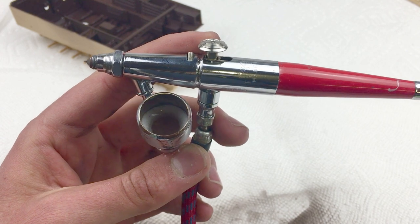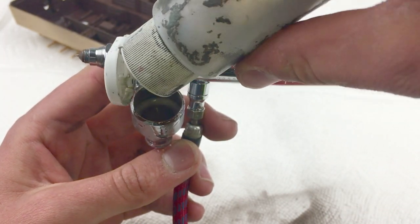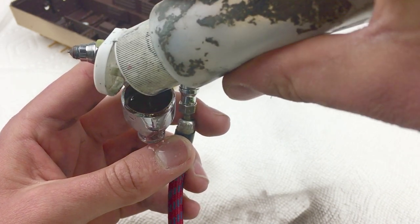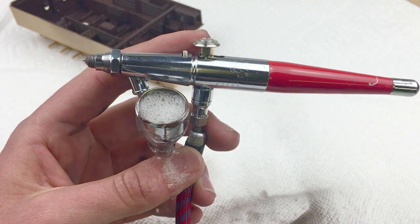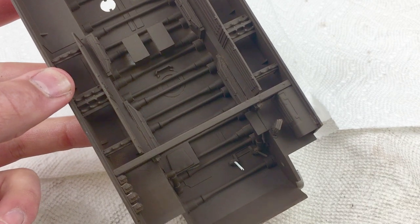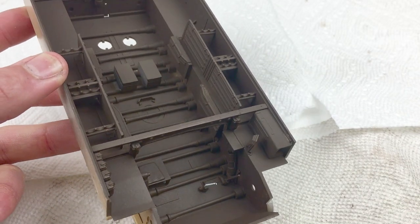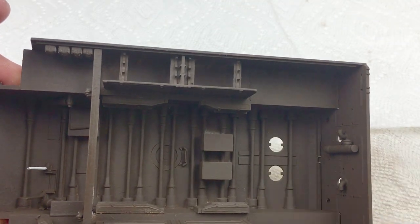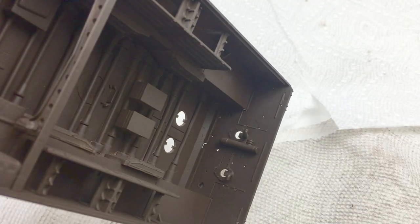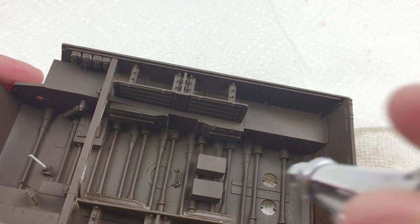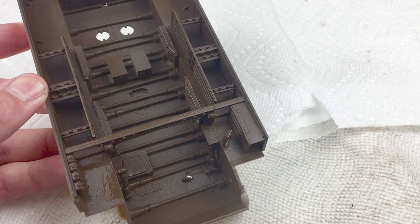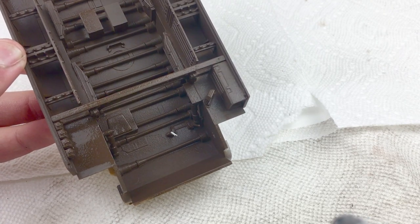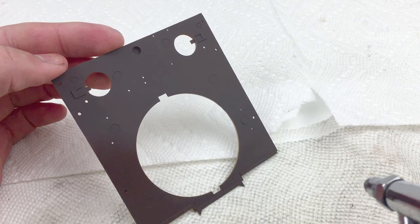I also thin the hairspray down in about a 50-50 ratio since it reduces the potency of the hairspray and makes application easier not to mess up. Once the base coat is completely dry, we can spray a thin, but continuous layer of the diluted hairspray onto the model.